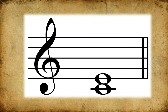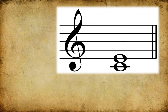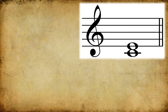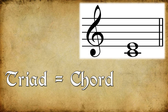Renaissance composers began to rely on the interval of the third, which was considered dissonant — meaning unpleasant — during the medieval period. This allowed for greater emotional content in music, as it is the third which gives chords a major or minor sound. Full triads were commonplace in the 15th century.